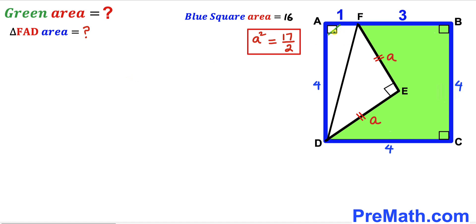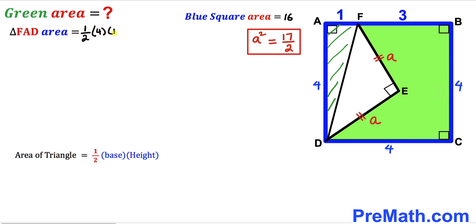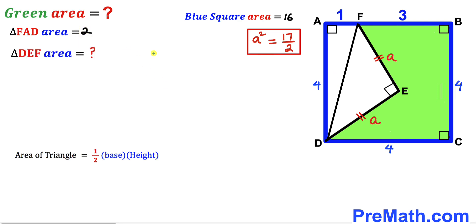Now let's calculate the area of triangle FAD using the formula: area equals one-half times base times height. The base of this triangle is 4 and the height is 1 unit. So the area of triangle FAD is one-half times 4 times 1, which simplifies to 2 square units.